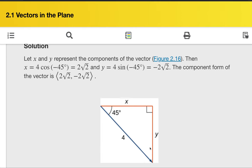Sine of negative 45, it is negative square root of 2. So y-coordinate is negative, x-coordinate is positive. Beware of the sign of x-coordinate and y-coordinate. So the component form for the vector is 2 times square root of 2 and negative 2 times square root of 2.